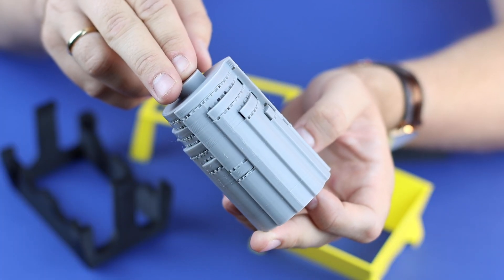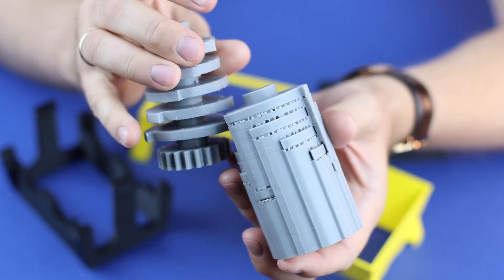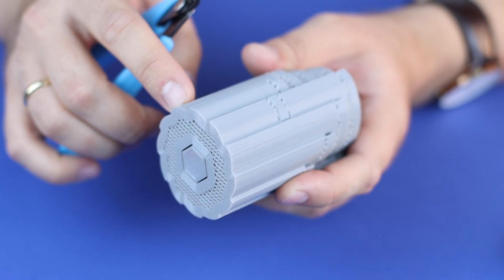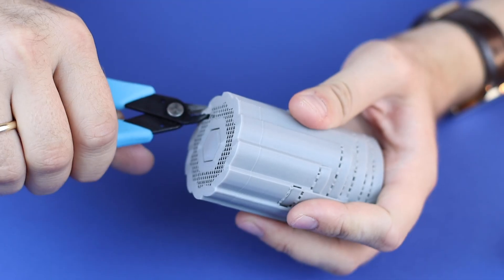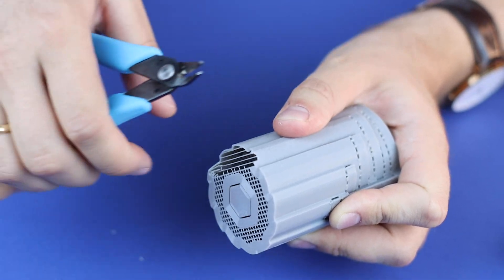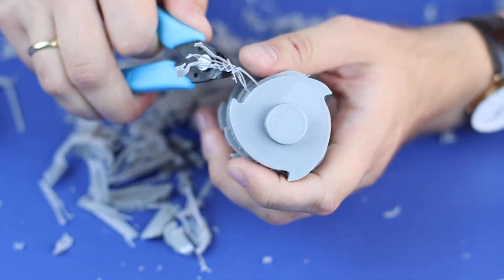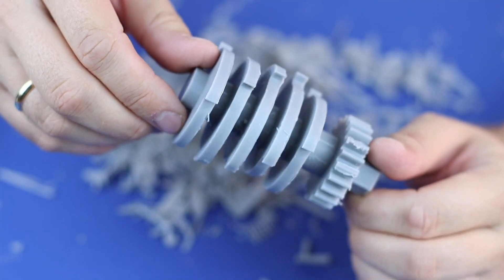Now we need to remove all the supports from this object and it should look like this. It's not so difficult, but it takes time, so now we'll spend about 20-30 minutes to make it done. And it's done, so now we can assemble this model.